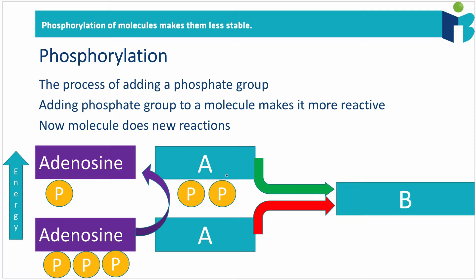Now, why is this useful? Why does the body like to do this with ATP? Well, it's because in order for A to get to product B, it would have to go against what it tends to want to do. What I mean by that is that molecules tend to want to become more stable.